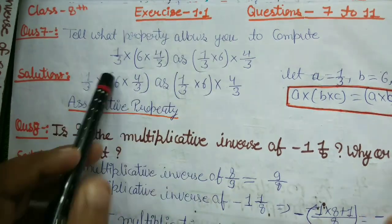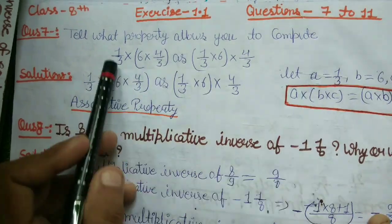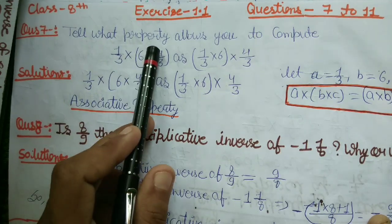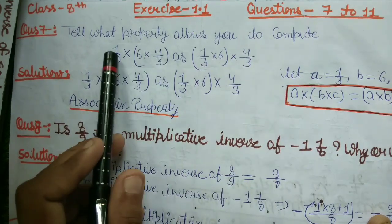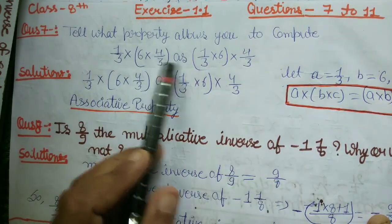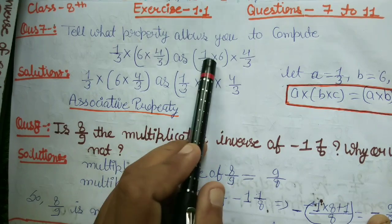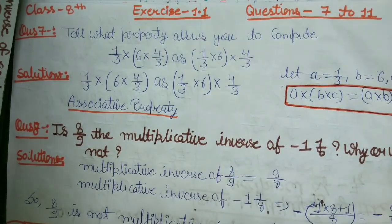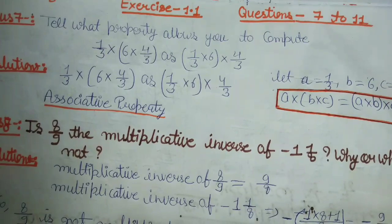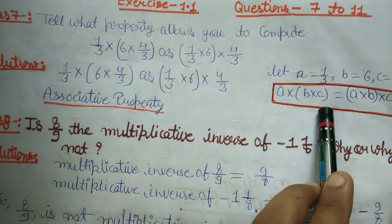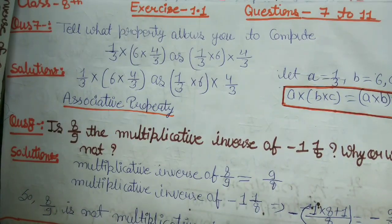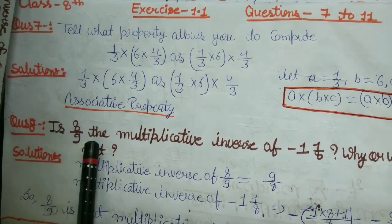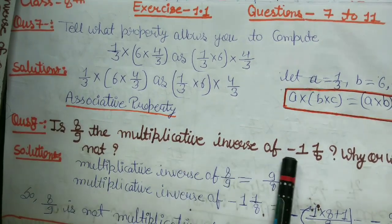For example, isko hum kya maan lete hain? A kya hamara? 1 upon 3. B is 6 aur C kya hamara? 4 upon 3. Toh yeh kis form mein likha wa hai? A into (B into C) equals (A into B) into C. Toh yeh property kaun si thi? Yeh property hamari associative property thi — A into (B into C) equals (A into B) into C.